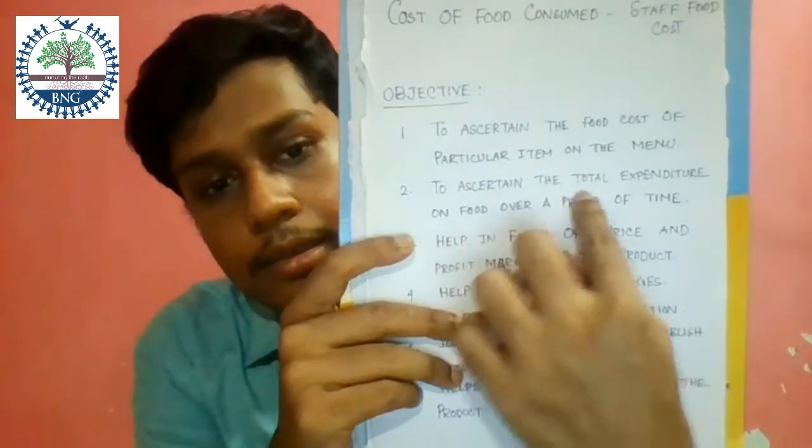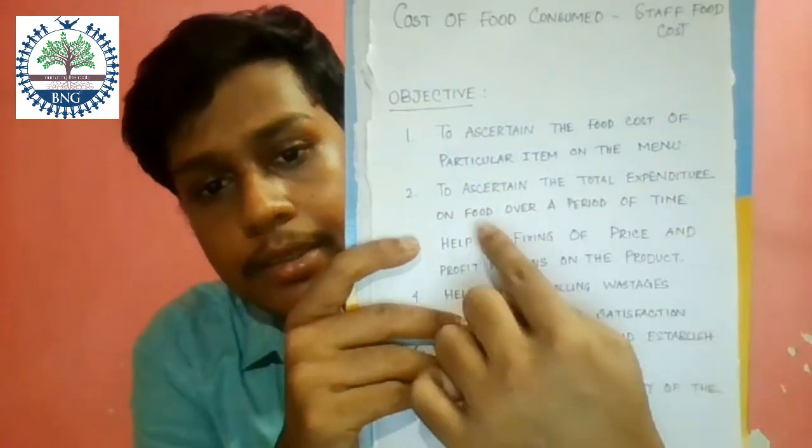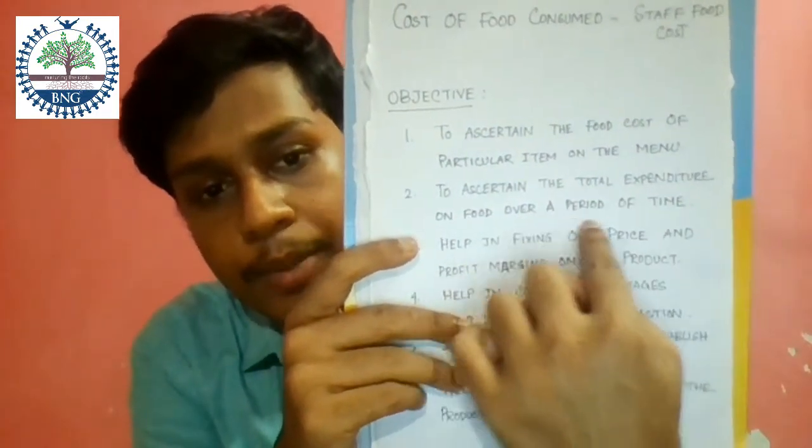Second, to ascertain the total expenditure on food over a period of time — to know what costs we expend on food in our establishment.